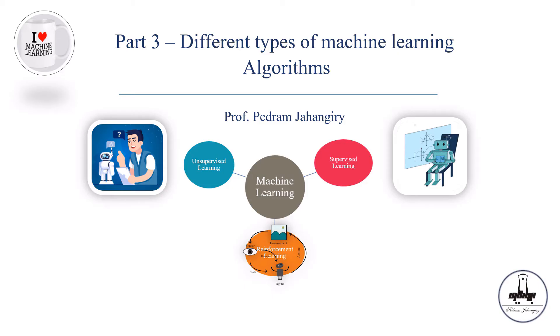Alright, in part 1 and 2, we covered the difference between machine learning and statistical learning. We also reviewed the definition of machine learning itself. Now in part 3, I will cover different types of machine learning algorithms, namely supervised, unsupervised, and reinforcement learning. So let's dive into it.